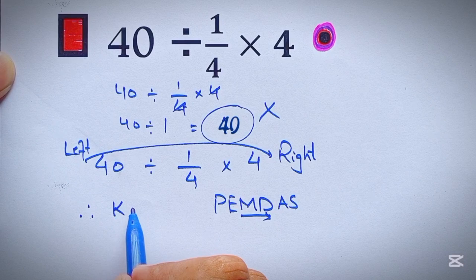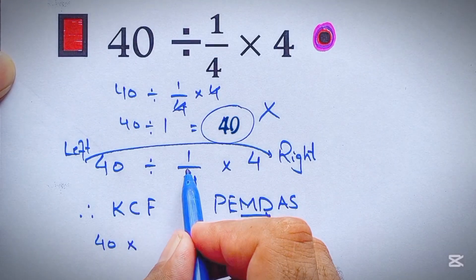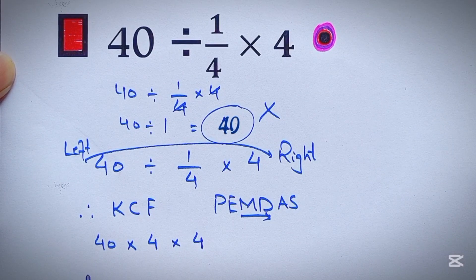According to the KCF rule, keep the first fraction, change division to multiplication, and flip the second fraction. We can rewrite it like 40 times 4, and again times 4.